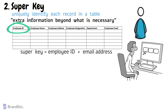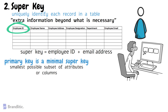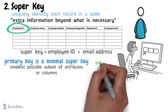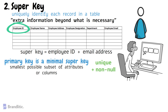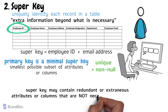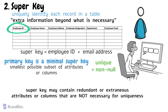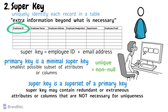However, a super key can also include unnecessary columns that are not required for uniqueness. The key difference between a super key and a primary key lies in their uniqueness and minimality. A primary key is a minimal super key, meaning it is the smallest possible subset of attributes or columns that can uniquely identify a record in a table. On the other hand, a super key may contain redundant or extraneous attributes that are not necessary for uniqueness. These additional attributes provide extra information but are not required to uniquely identify a record. In other words, a super key is a superset of a primary key.